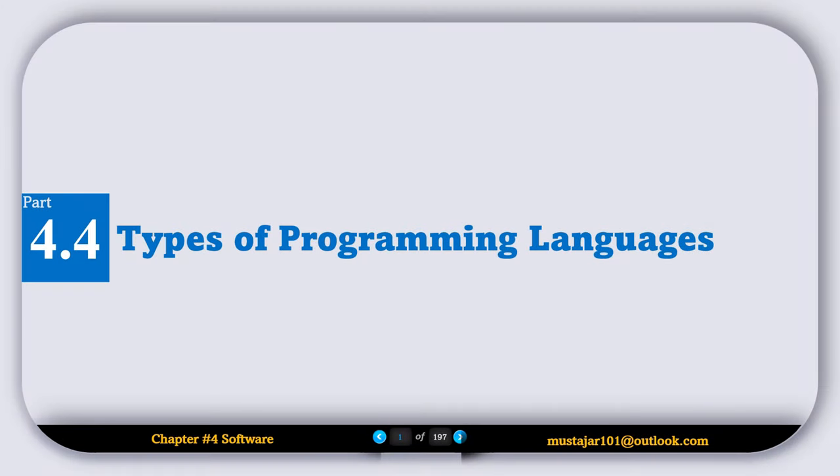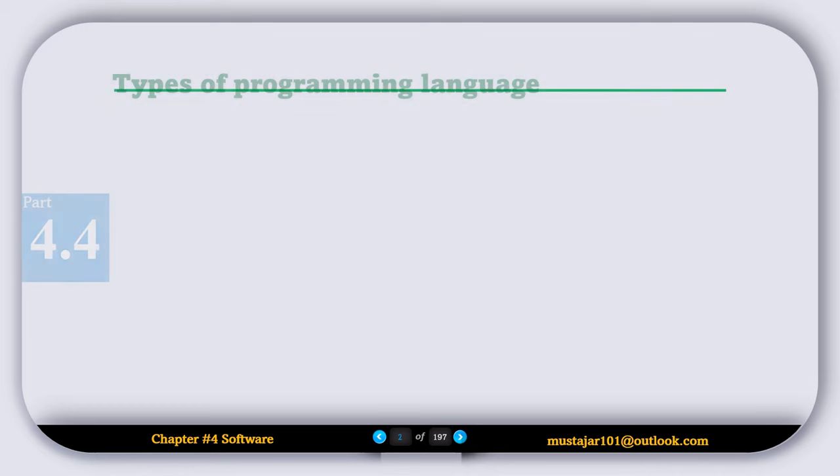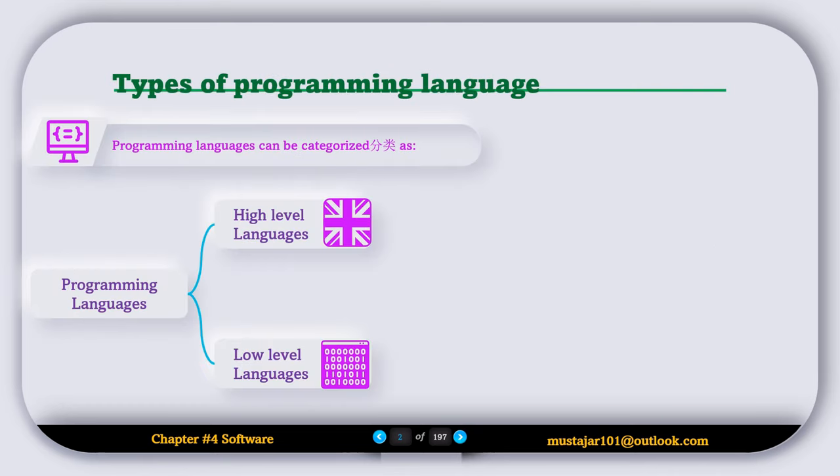Types of Programming Languages. Programming languages can be categorized as high-level languages and low-level languages.